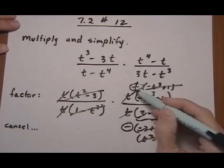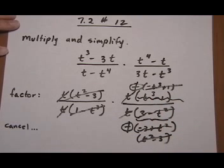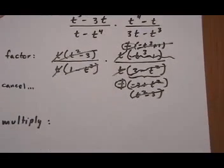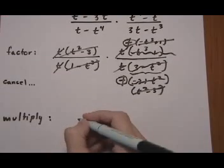Minus top and bottom, cancel out. And once we've done all the canceling, we multiply. But everything is canceled out. So once we multiply, we get a 1.